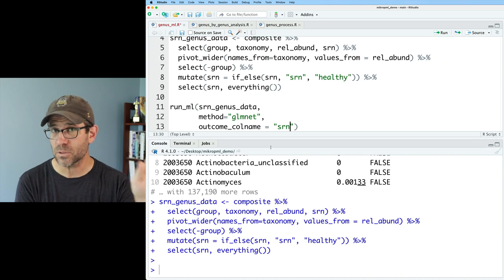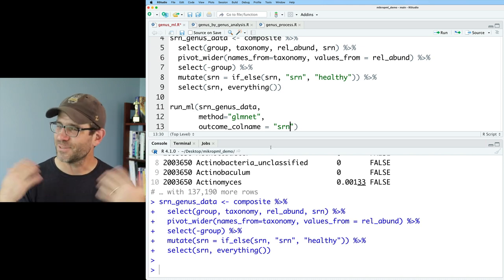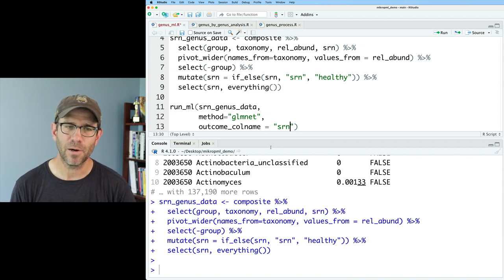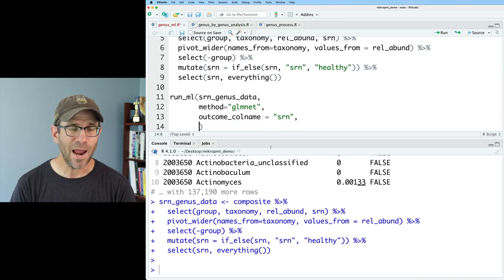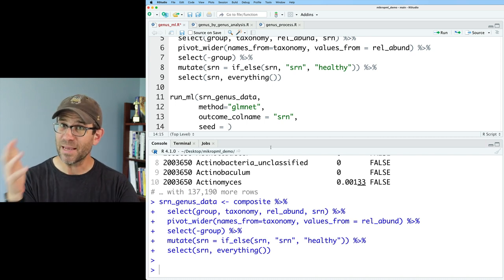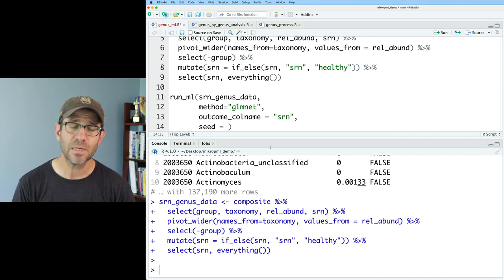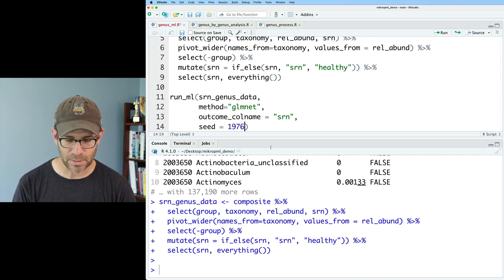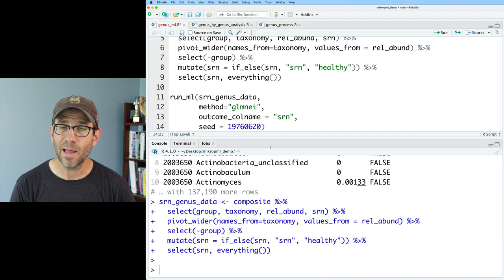So something you may not have noticed is that the order of the columns in that select function determines the order that they are outputted. So I'll do SRN and everything as a function. And so the everything function gets everything else. And so again, this doesn't change the output. I'm going to go ahead and call this SRN_genus_data. Now I'm ready to run the run_ML function from microp_ml. So I'll do run_ML, and then I'll give that SRN_genus_data. And I will say method equals glmnet. So glmnet will do a logistic regression. And we will see other algorithms that we can use later in future episodes.